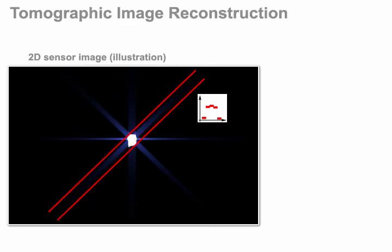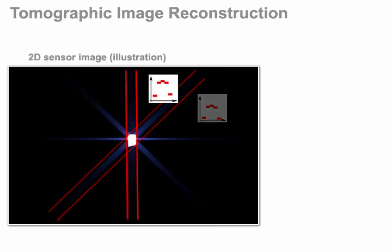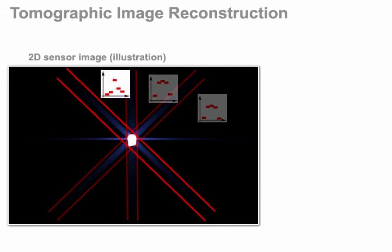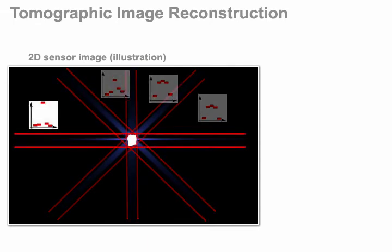This is essentially a tomography problem in which multiple line integrals from different directions are used to reconstruct an unknown volume. The individual glare directions in our case therefore correspond to different views of a tomography problem.